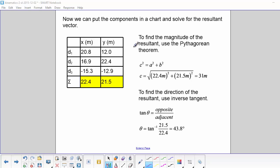Now we can put all the components together in a chart and solve for the resultant vector. So for our X components, we had 20.8, 16.9, and negative 15.3. When we add those together, we get 22.4. For our Y components, we had 12, 22.4, and negative 12.9. When we add those together, we get 21.5.